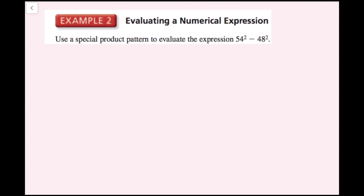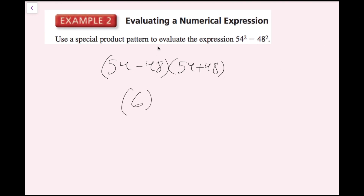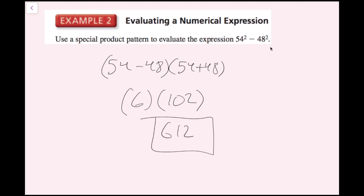For example 2, we're going to use a special product pattern to evaluate the expression 54 squared minus 48 squared. I'll rewrite this as a difference of squares: 54 minus 48 times 54 plus 48. Well, 54 minus 48 is 6. So now I have 6 times the sum of 54 and 48, which is 102. And 6 times 102 is 612. That is how to evaluate this expression using our difference of two squares factoring method.